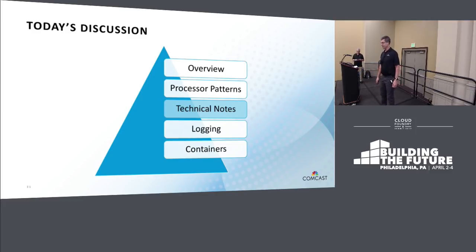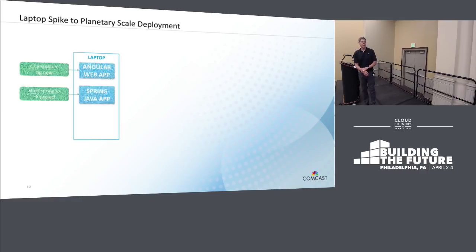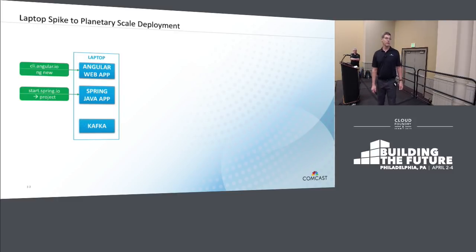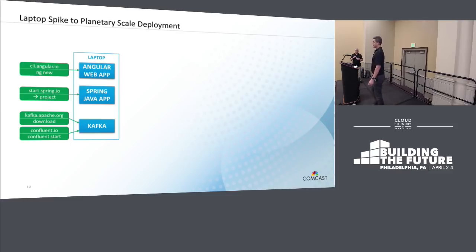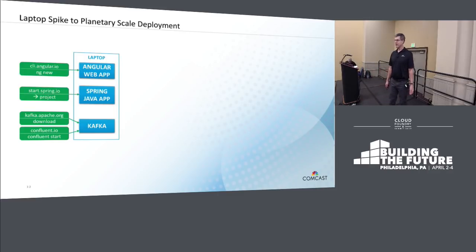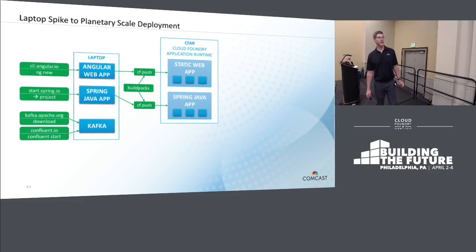Let's take a quick look at some of the technical notes we've made along the way. It's easy to stand up a fully functioning system on a laptop. We've talked about how we can get the Angular and Spring Java applications deployed to the local environment. We can also set up a local Kafka server by visiting kafka.apache.org to download Kafka and start the Zookeeper and Kafka broker services. Or we can visit confluent.io and download the Confluent distribution, which includes the Confluent CLI. We can use the 'confluent start' command to start up all of the Kafka services, and 'confluent destroy' to create a clean, empty Kafka instance and then run 'confluent start' again — which is great for your development loop. When you're ready, you can push these applications to the Cloud Foundry application runtime.